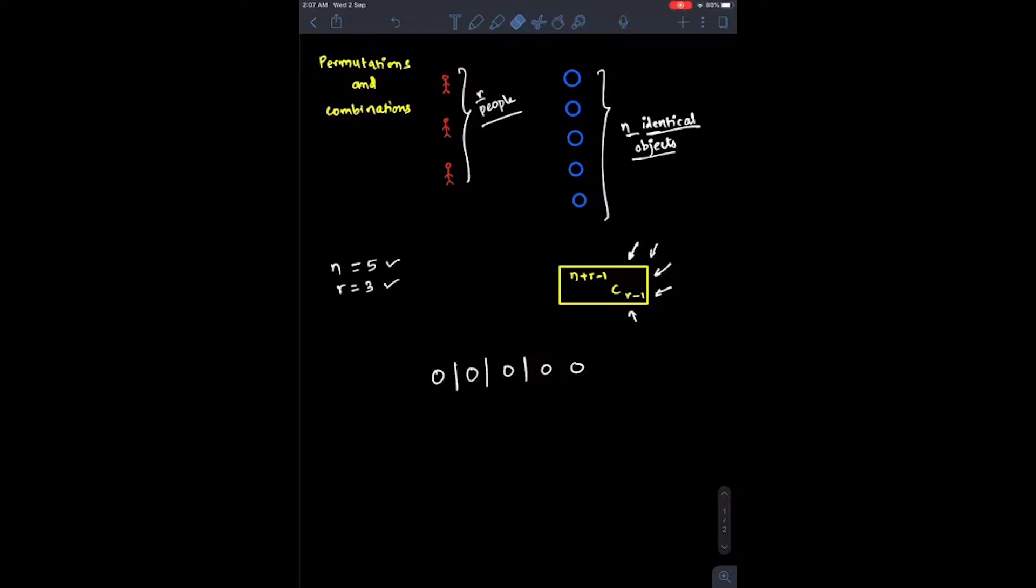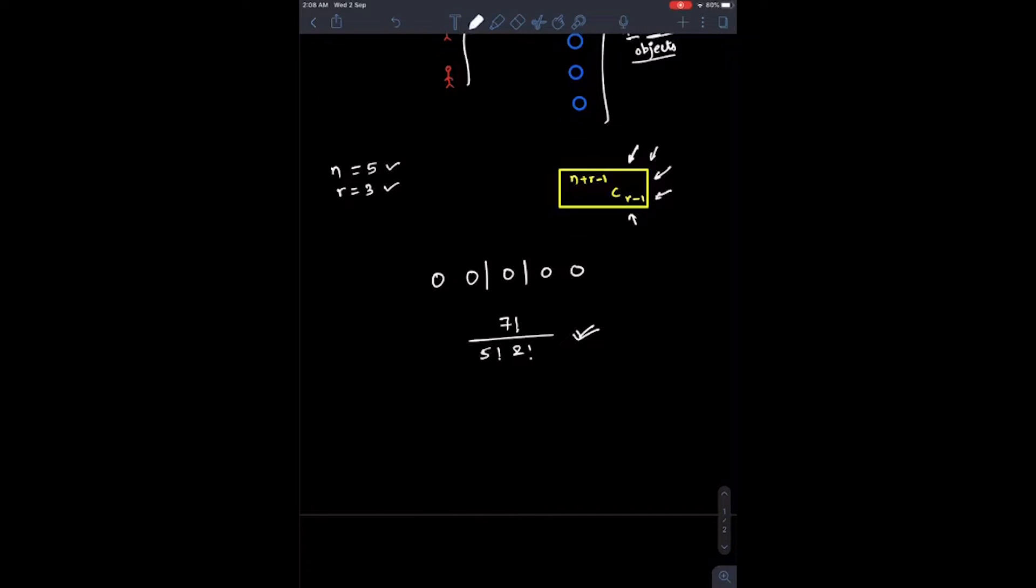So here we want to create three compartments for three people, so we want to use two sticks. And now the question becomes really easy. What all you need to do is take all this and arrange and rearrange them among themselves. Now how would you go about solving this? You know that you have seven objects, so you just rearrange them amongst themselves, and then you know that these five are identical, so you will be dividing by 5 factorial and 2 factorial.